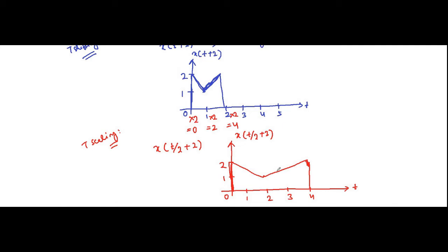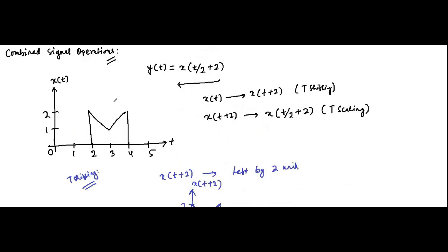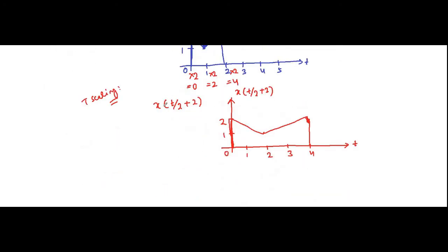This is the combined signal operation: first time shifting by 2 units to the left to get x(t+2), then time scaling x(t/2 + 2) applied to this time shifted signal to get the final signal.